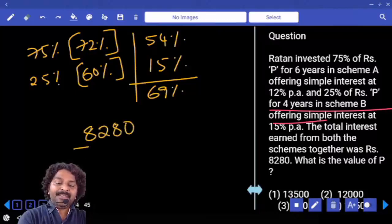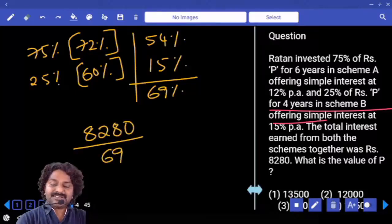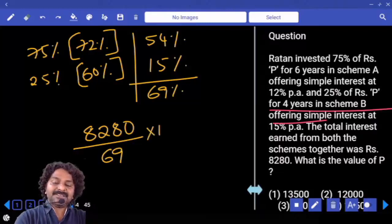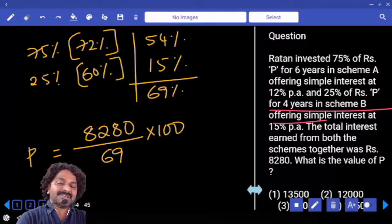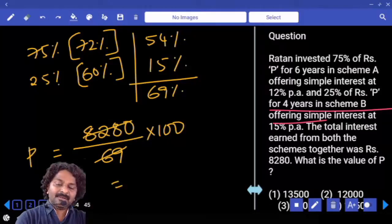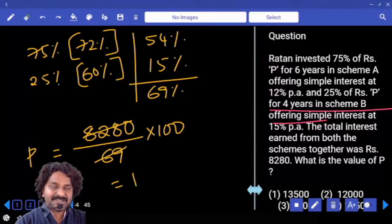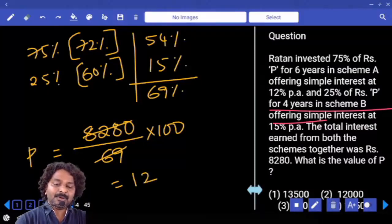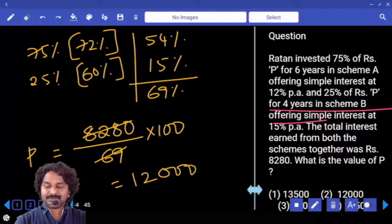8280 is equal to 69%. 1% value is equal to 8280 divided by 69. We were asked to calculate P value which was 100%, so multiply by 100. 69 goes into... once, how much is left? 13 and then 8, 138, 2 times and 3 zeros. 12,000, thank you.